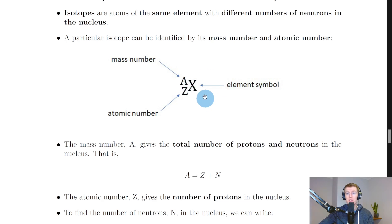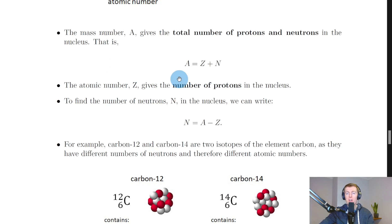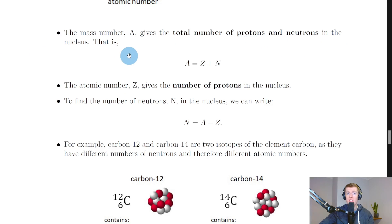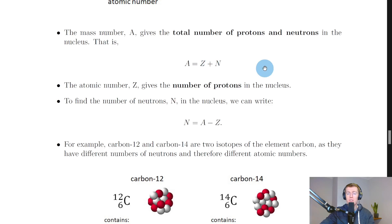The mass number, symbol capital A, gives the total number of protons and neutrons in the nucleus. We can write: A equals Z plus N, where Z is the number of protons in the nucleus and N is the number of neutrons in the nucleus.